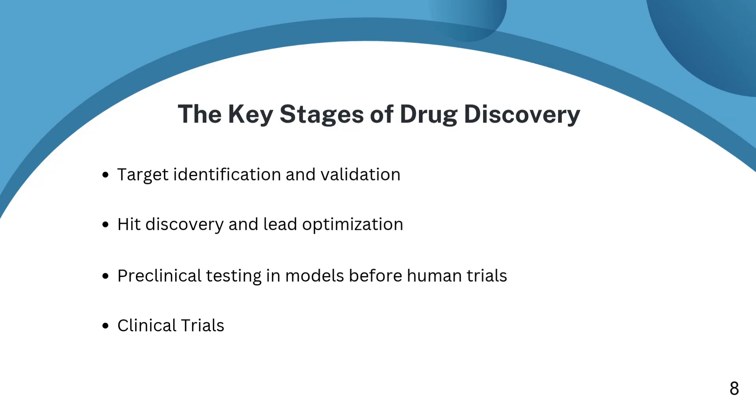Finally, we come to the fifth stage, which is regulatory review and approval. Data from clinical trials are submitted to agencies like the FDA or the EMA. If approved, the drug can finally reach the market. So these are the five stages of drug discovery. But this isn't the end of the road. Phase four, or post-marketing surveillance, continues to monitor the drug's safety in the real world.